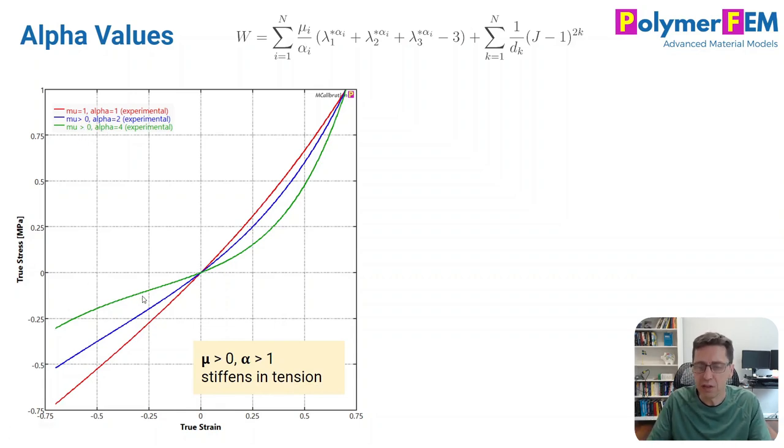We see that the larger alpha is, we get a more stiffening effect in tension, but we get a softer response in compression. And that's how alpha influences that response.